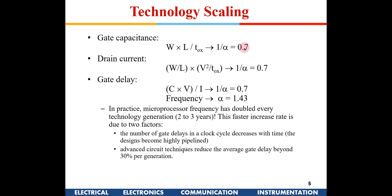What about drain current? Assuming VT is proportionately reduced, the drain current ID depends on (W/L) × Cox × (VGS − VT)². W/L cancels, Cox is related to gate capacitance and reduces by 0.7, and VDD also reduces by 1/α. The net effect is that drain current is reduced by a factor of approximately 0.7.